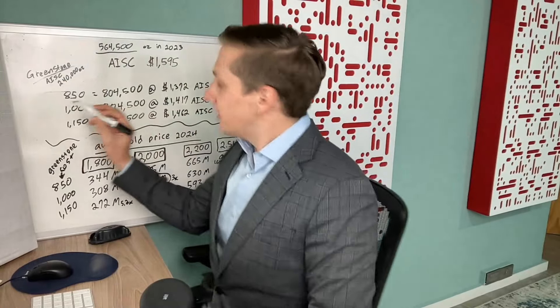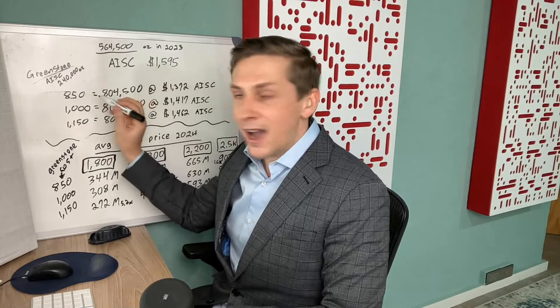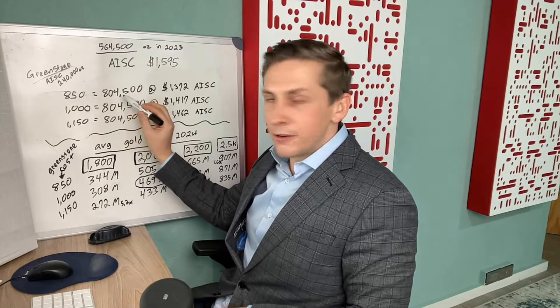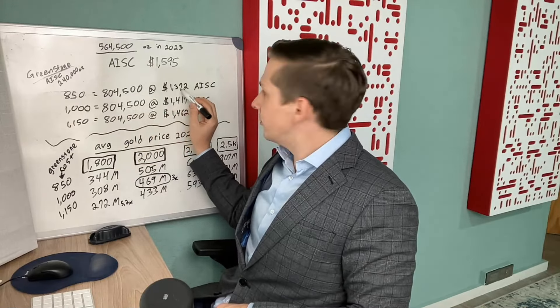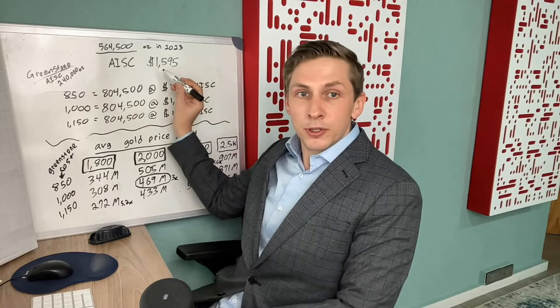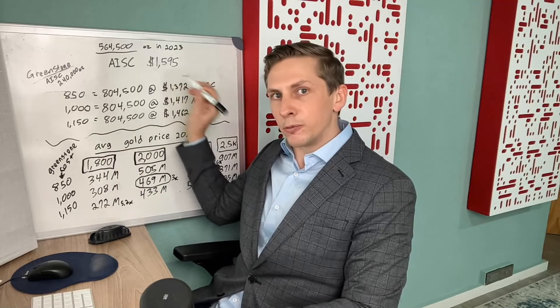If they can hit this $850 an ounce number all-in sustaining cost at Greenstone, they would be producing 804,500 ounces at $1,372 all-in sustaining cost. This would be company-wide. This was their all-in sustaining cost for their other mines that are already in production.